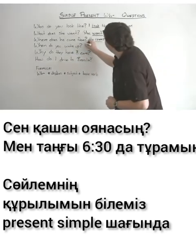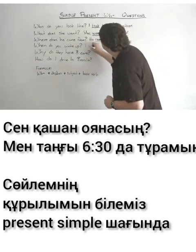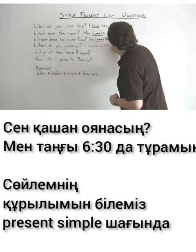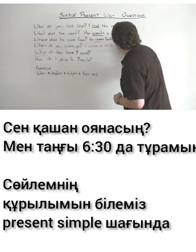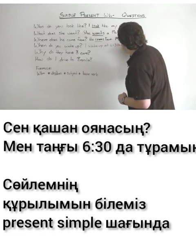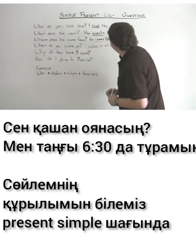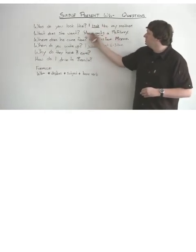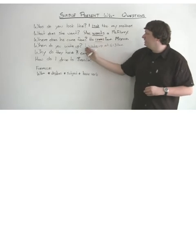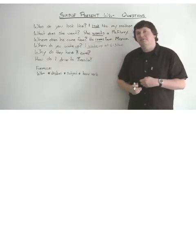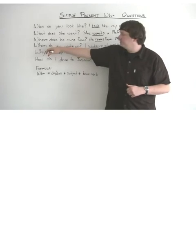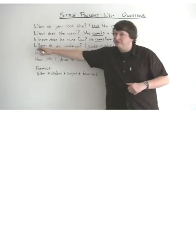When do you wake up? I wake up at 6:30 a.m. Notice the structure — when giving simple present sentences: I look like, she wants, he comes from, I wake up — there's no be verb. So in the question, you need the do auxiliary after the question word.